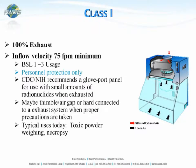The Class I is only providing personnel and environmental protection — it is not providing any product protection in the work zone. The airflow can be recirculated back into the room space, or exhausted to the outside via a simple exhaust transition or a hard connection to the exhaust system.